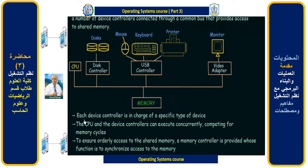Each device controller is in charge of a specific type of device, as shown in the diagram. The CPU and the device controllers can execute concurrently, competing for memory cycles. As I taught in the first lecture, whenever something has to be executed or loaded, it has to be loaded into your main memory.